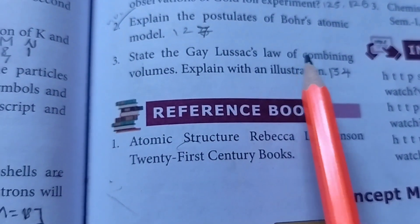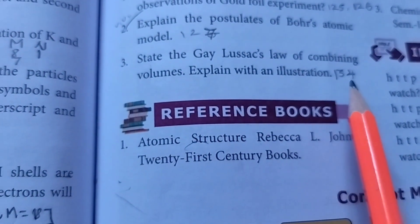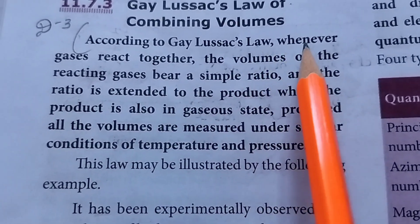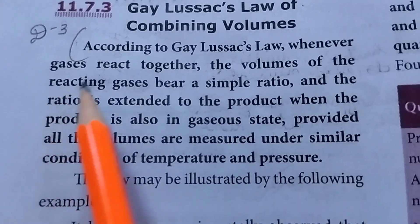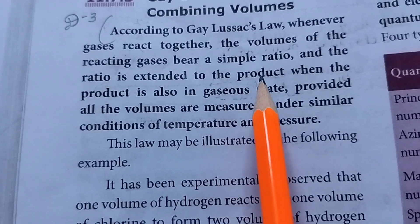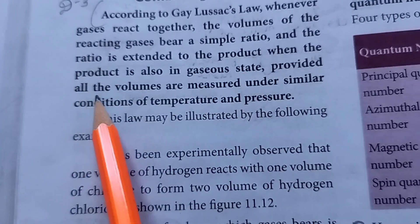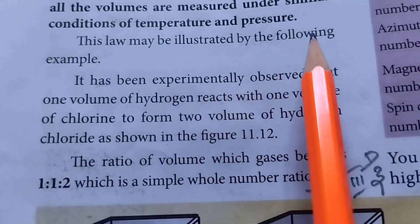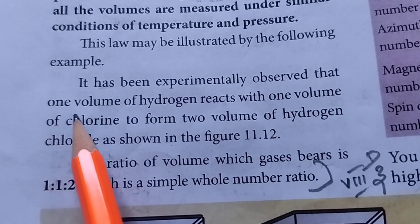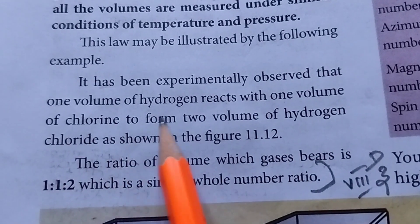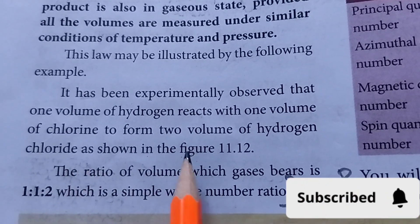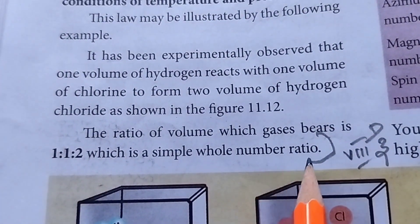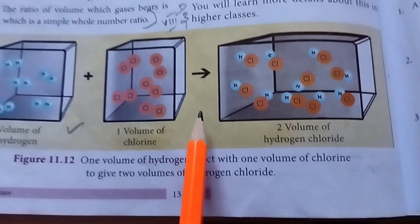Then third question, state Gay-Lussac's Law of Combining Volumes explained with an illustration. Take page number 134. First paragraph, according to Gay-Lussac's Law, whenever gases react together, the volumes of the reacting gases bear a simple ratio and the ratio is extended to the product when the product is also in gaseous state, provided all the volumes are measured under similar conditions of temperature and pressure. This law may be illustrated by the following example. It has been experimentally observed that one volume of hydrogen reacts with one volume of chlorine to form two volumes of hydrogen chloride as shown in the figure. The ratio of the volume which gases bear is 1:2 which is a simple whole number ratio. This is the diagram of the volume of hydrogen. This is the third answer.